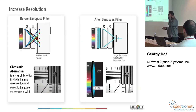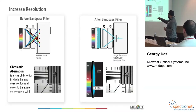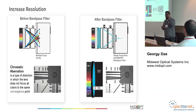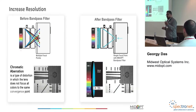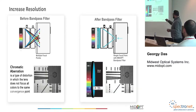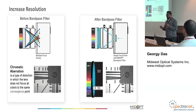Next we have resolution. There's a type of distortion that occurs in lenses when the lens tries to focus different wavelengths at the same point. Because different colors have different refractive indexes, they bend at different points, and the lens has a difficult time focusing all those wavelengths — this is called chromatic aberration, and you lose some resolution. But if you only care about a single wavelength, you can use a filter to filter out the wavelengths you don't care about and gain resolution. You can see the difference in the image with no filter versus with the filter.